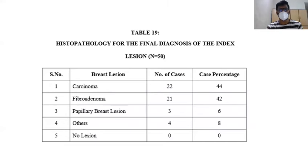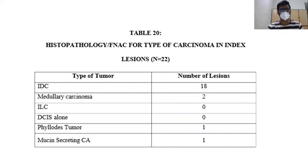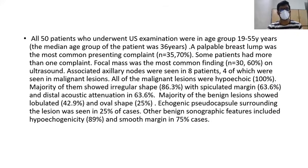This table shows comparison of ultrasound features with FNAC and biopsy. This table shows histopathology for the final diagnosis of the index lesion, histopathology and FNAC for the type of carcinoma in index lesions, and comparison of ultrasound classification with pathological findings in 50 breast lesions to detect malignant lesions.